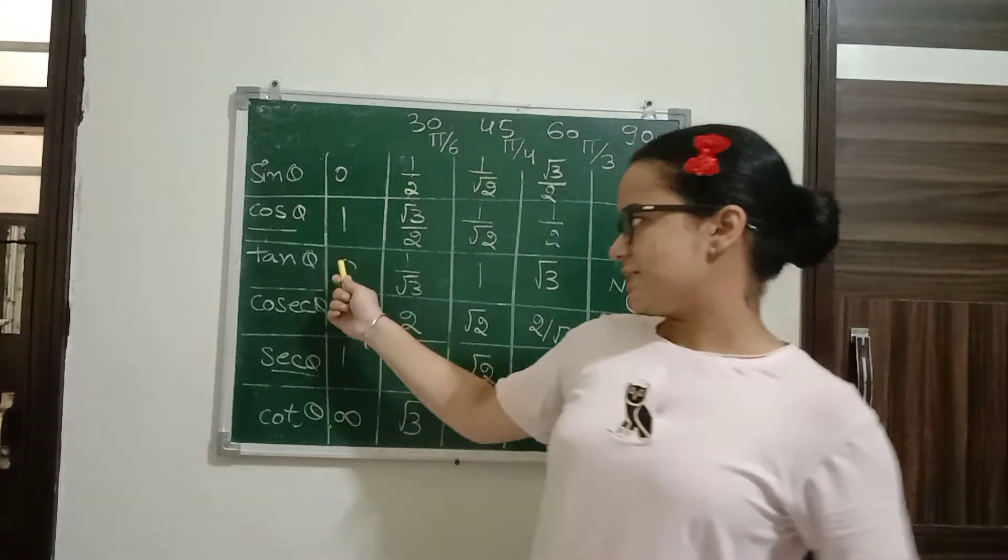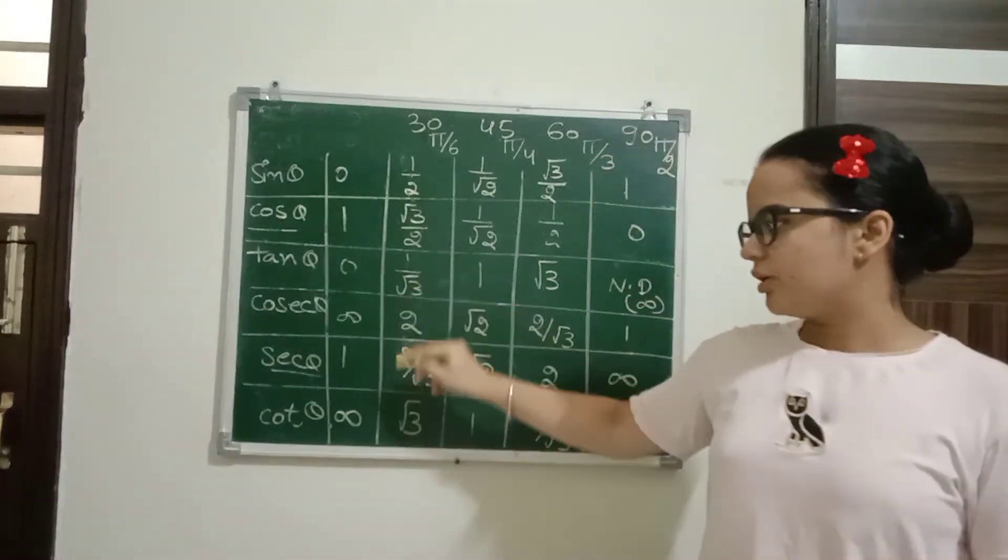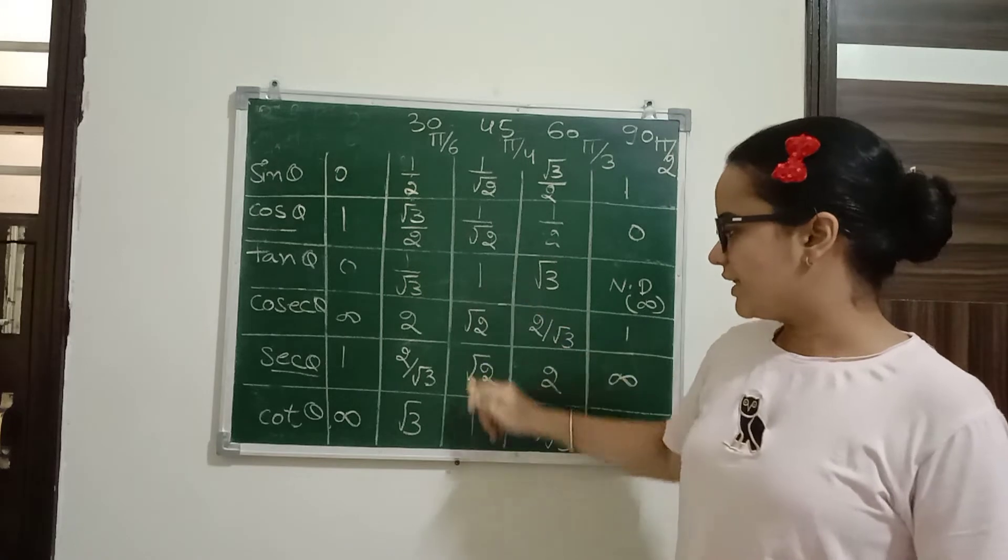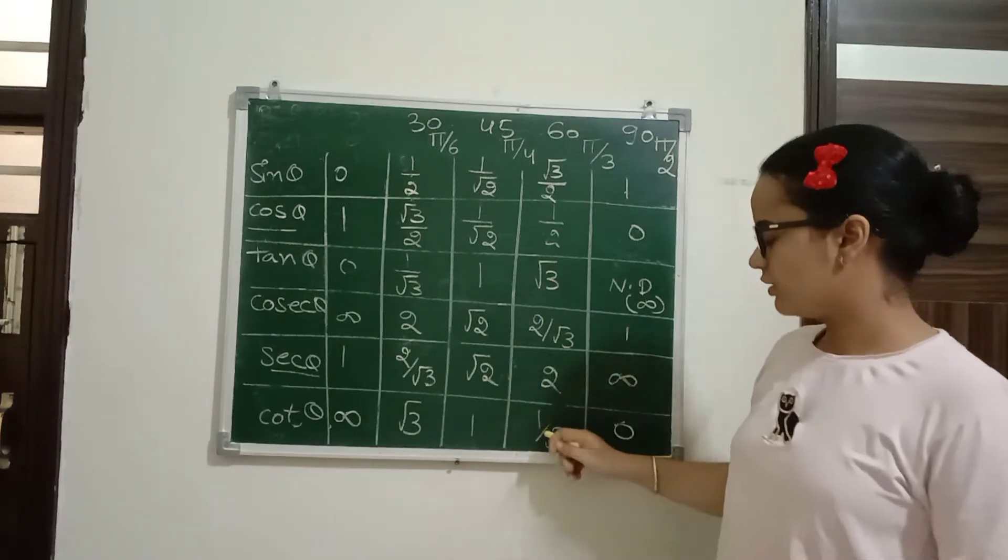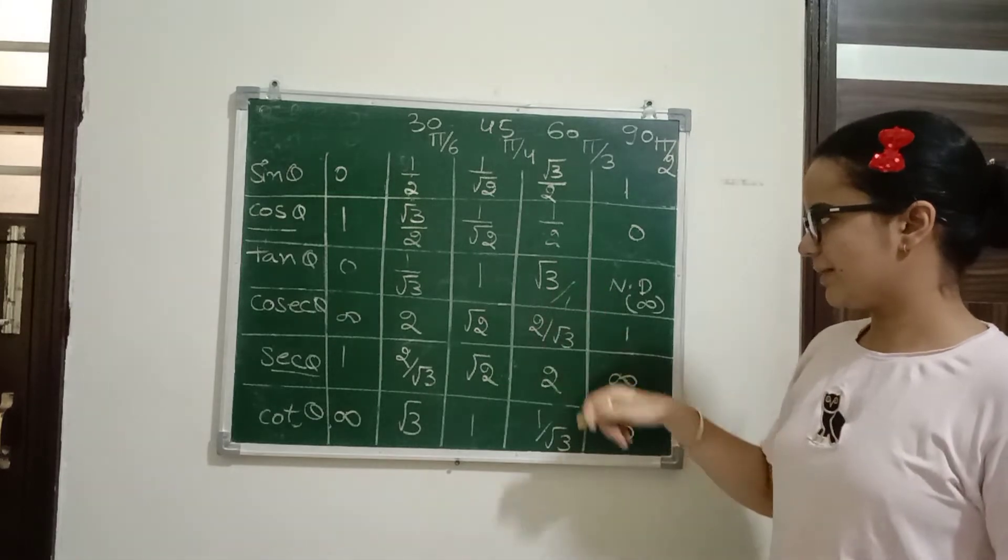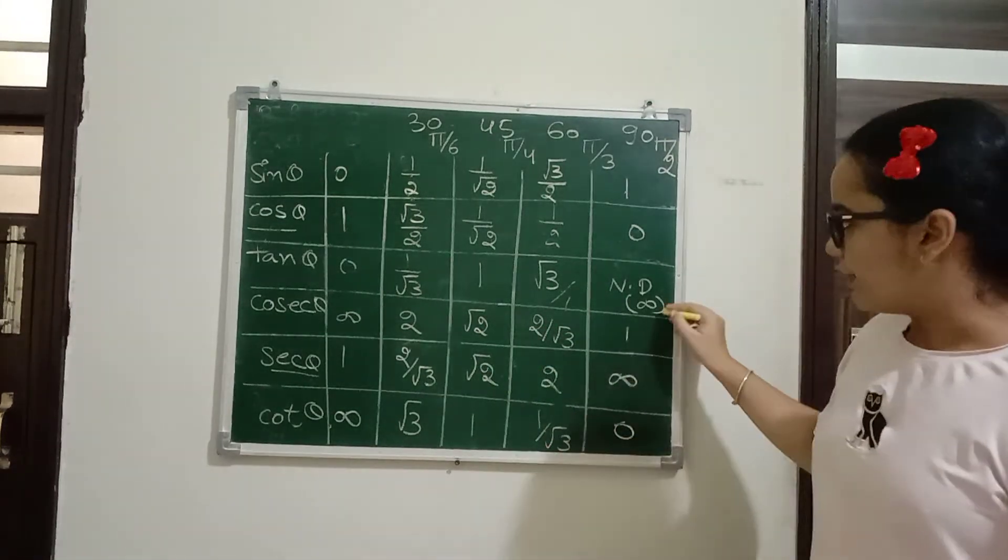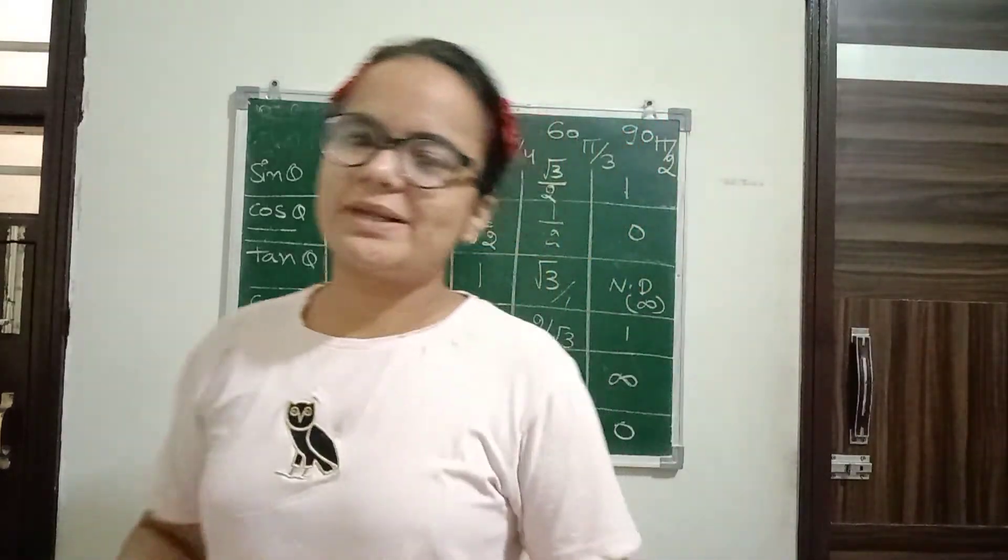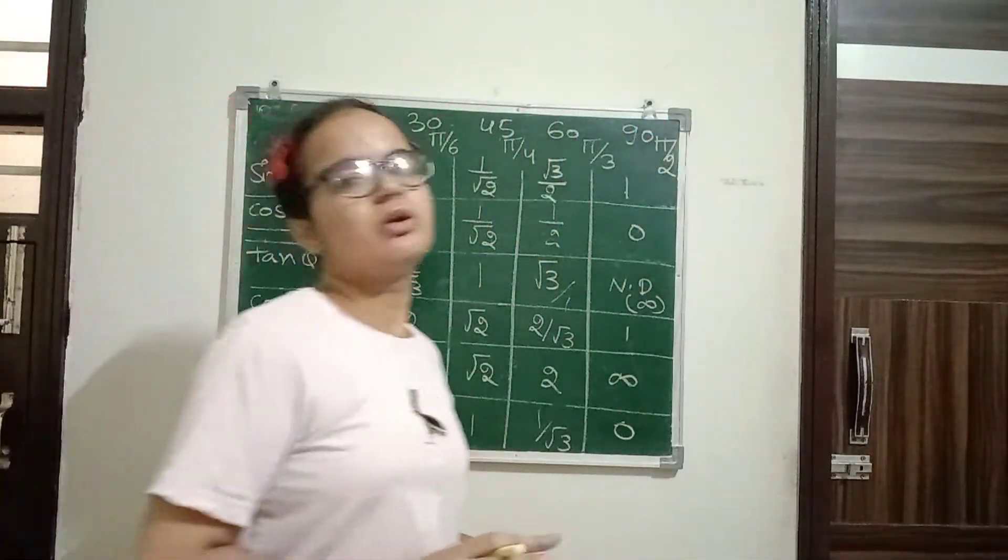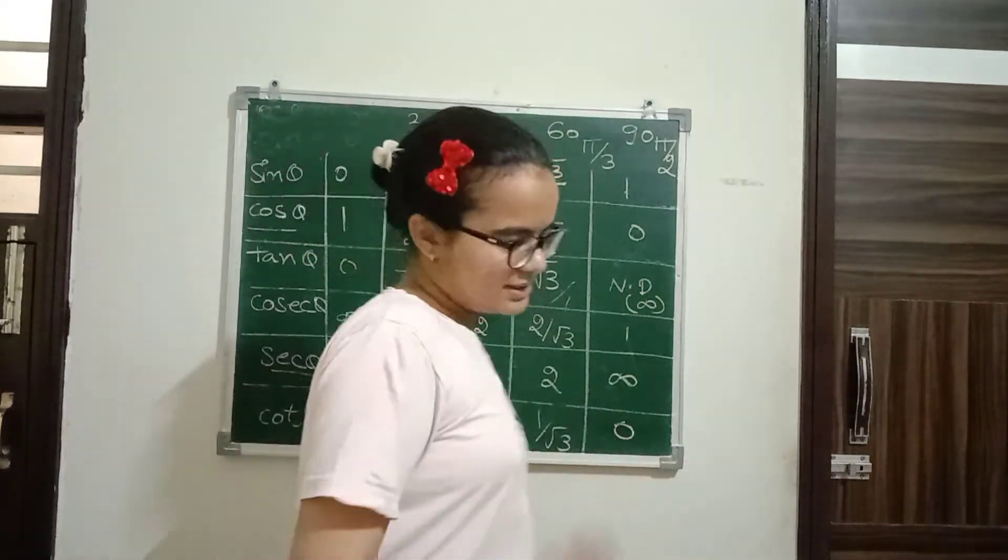Now cot theta as reciprocal: zero reciprocal is not defined, one by root three becomes root three, one stays one, root three becomes one by root three, and not defined reciprocal is zero.